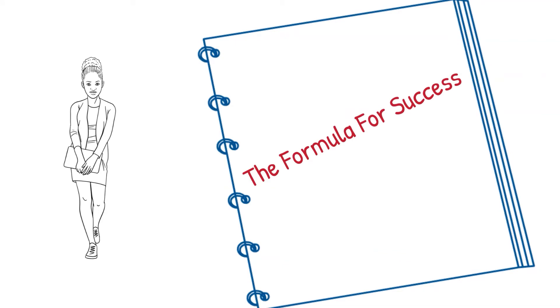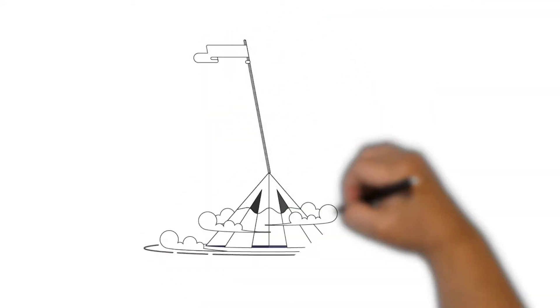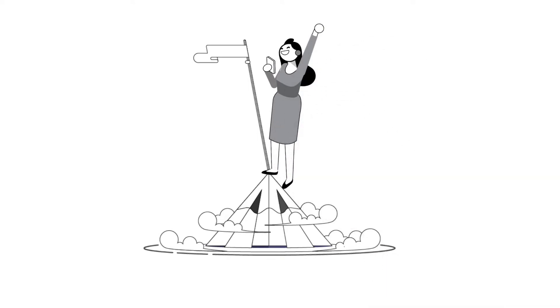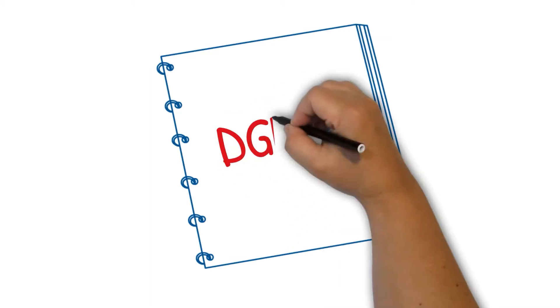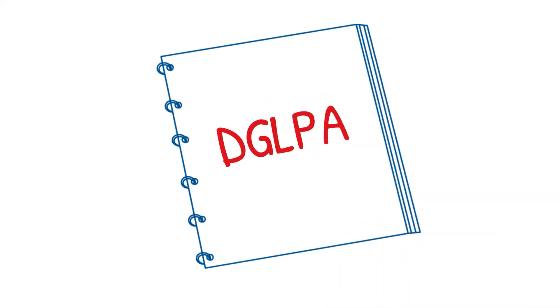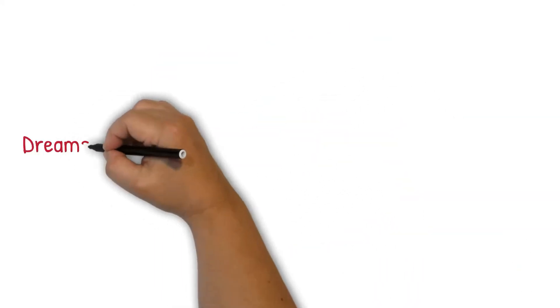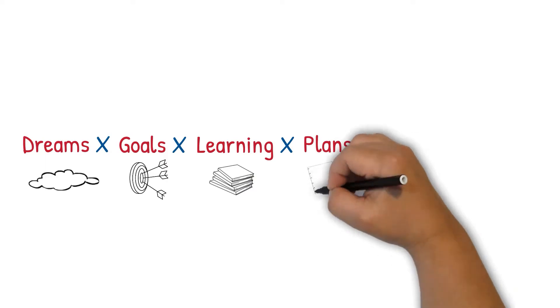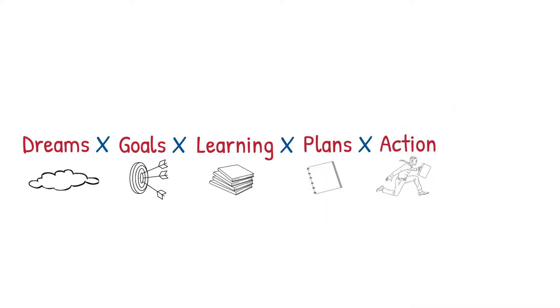Let's take a look at the formula for success. Success in any part of life is about achieving lifelong goals or short-term goals — however you define success. The formula looks like this: Dreams times Goals times Learning times Plans times Actions equals Success. It's a five-part formula: Dream, Goal, Learn, Plan, Act — and that's what brings success in your life.